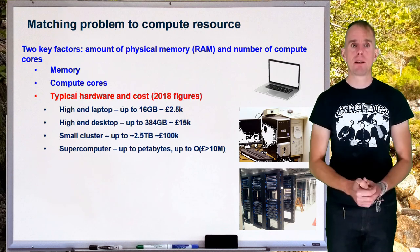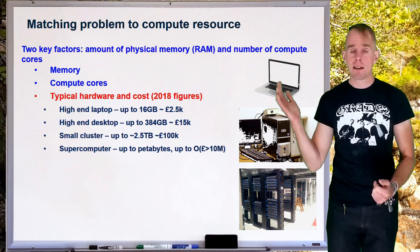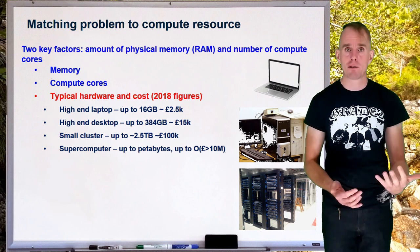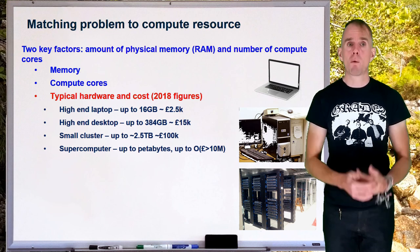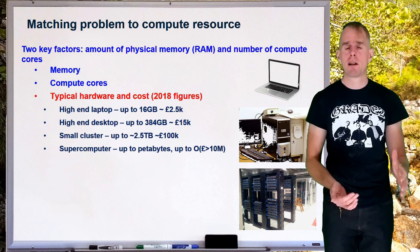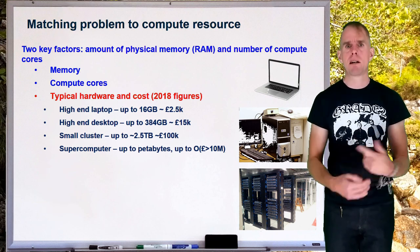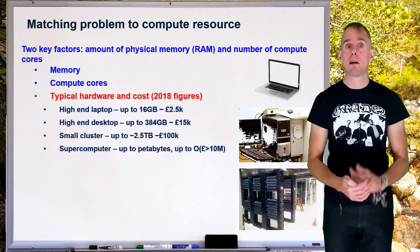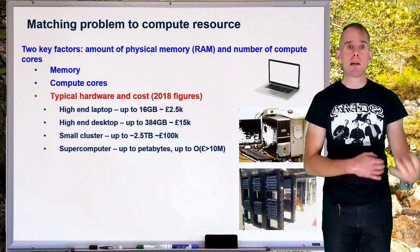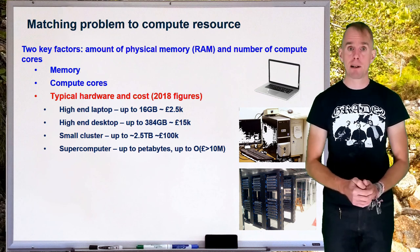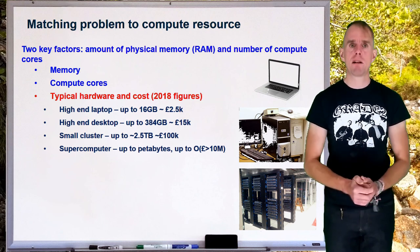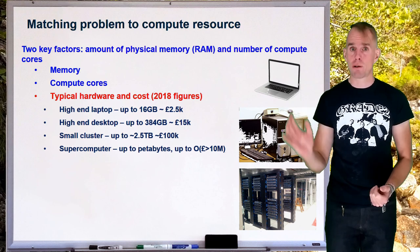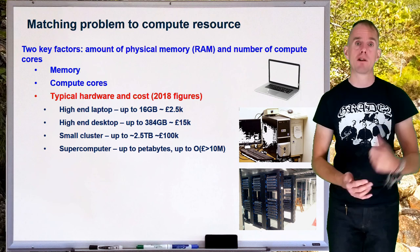Let's think about some typical hardware. The cost figures are a couple of years out of date but are somewhat representative. A high-end laptop, very good for small scale problems and for proofing problems, might cost around £2,500. A high-end desktop or single-server machine with several hundred gigabytes of RAM and maybe 40 to 60 cores might be of the order of £15,000. Small clusters — servers networked together with high-speed interconnects, around two and a half terabytes of distributed memory and three to four hundred distributed cores — might cost upwards of £100,000. True supercomputers can have petabytes of memory and tens if not hundreds of thousands of compute cores, costing of the order of £10 million for something appearing in the top 500 supercomputers.